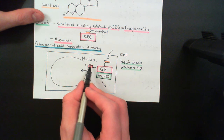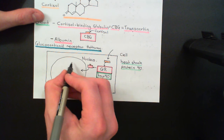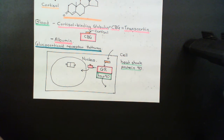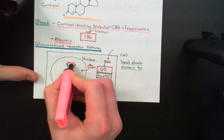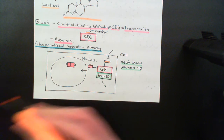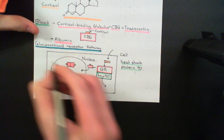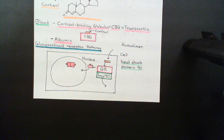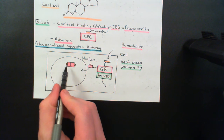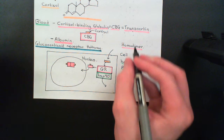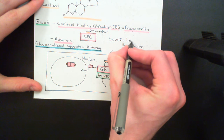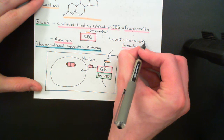The next step is for glucocorticoid receptors with cortisol molecules bound to them, now in the nucleus, to dimerise — to form a homodimer. So you'll have two glucocorticoid receptors, both with a cortisol molecule bound to them, forming a homodimer. A dimer is just a two-membered structure; homo means the same — so it's a two-membered structure made from two identical units. This glucocorticoid receptor homodimer is going to function as a transcription factor, specifically a specific transcription factor.